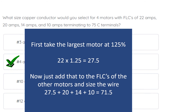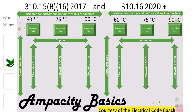First, we take our largest motor at 125%. We take 22 amps multiplied by 1.25, which equals 27.5. Now we add that to the FLCs of all the other motors. So we take 27.5 plus 20, plus 14, plus 10 — that equals 71.5 amps. We head to our primary ampacity table and select from the 75 degrees C column because that was the terminal rating. We come down and find a wire that can cover our known load, and we find that it is a number 4.